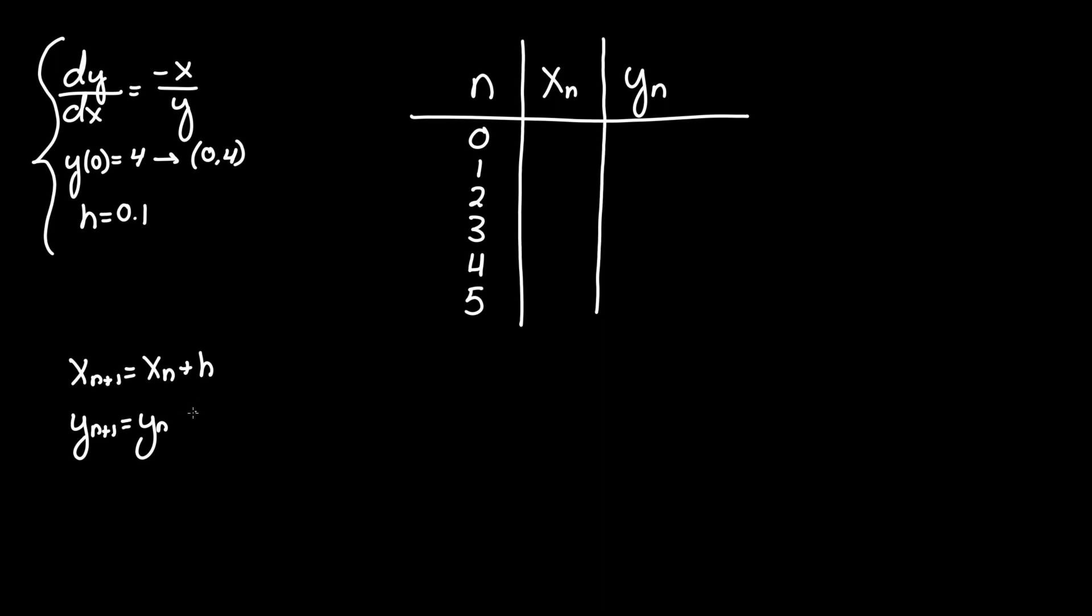So y of n plus h, the same interval size, times f prime of x n comma y n, where f prime is the same exact notation as dy/dx and x of n and y of n are representing this function negative x over y from the previous interval. By that you just plug in the previous numbers and multiply that by h.